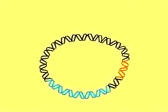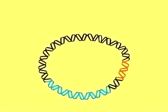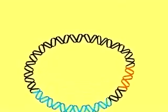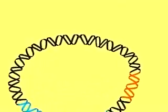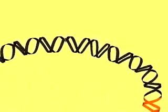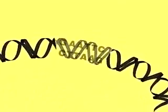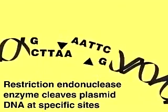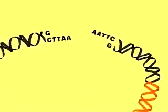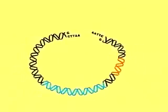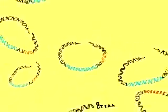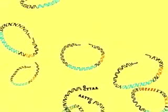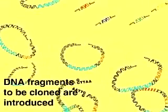To insert foreign DNA, we must first use a restriction enzyme to cleave the vector at the cloning site. Here, ECO-R1 cleaves the palindromic sequence GAATTC to produce single-stranded ends called sticky ends. These can hybridize with any piece of DNA that has also been cut with ECO-R1.